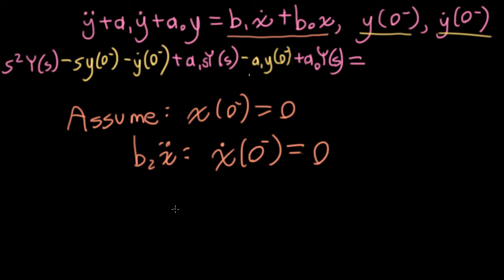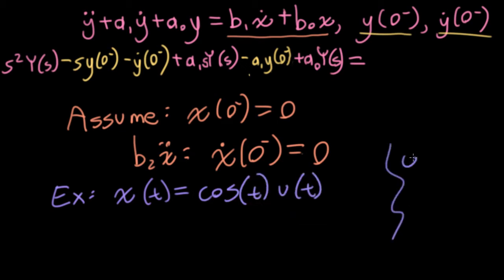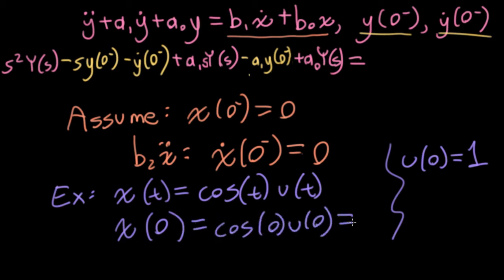This is a really important distinction to make because you can get into all kinds of confusion if you say things like the input x of t is cosine t ut. And we've defined the unit step function at zero as being one. So if you're trying to use Laplace transform techniques on the right-hand side here, and you're looking at that x dot term, if you don't make this distinction about these being pre-initial conditions, then you might write something like this. You would just stick in a zero without the little minus. You would say this is cosine zero and u zero. Both of these are one, and you get one.